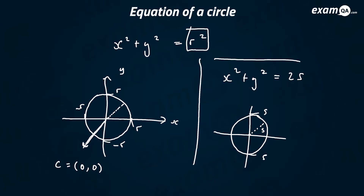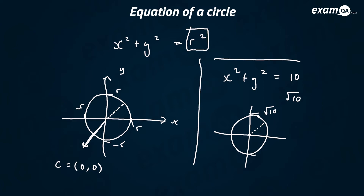They might not give you really nice numbers. They might say this equals 10, for example. So how does that change everything? This is the radius squared, so what is the actual radius? It's just square root of 10. So the circle would extend to square root 10, square root 10, etc. It's quite straightforward.